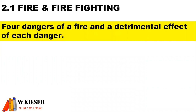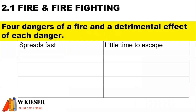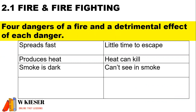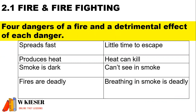Four dangers of a fire and a detrimental effect of each danger. Fire spreads fast, which means there is little time to escape. It produces heat, and heat can kill. Smoke is dark so you can't see inside smoke, and breathing in the smoke is deadly.